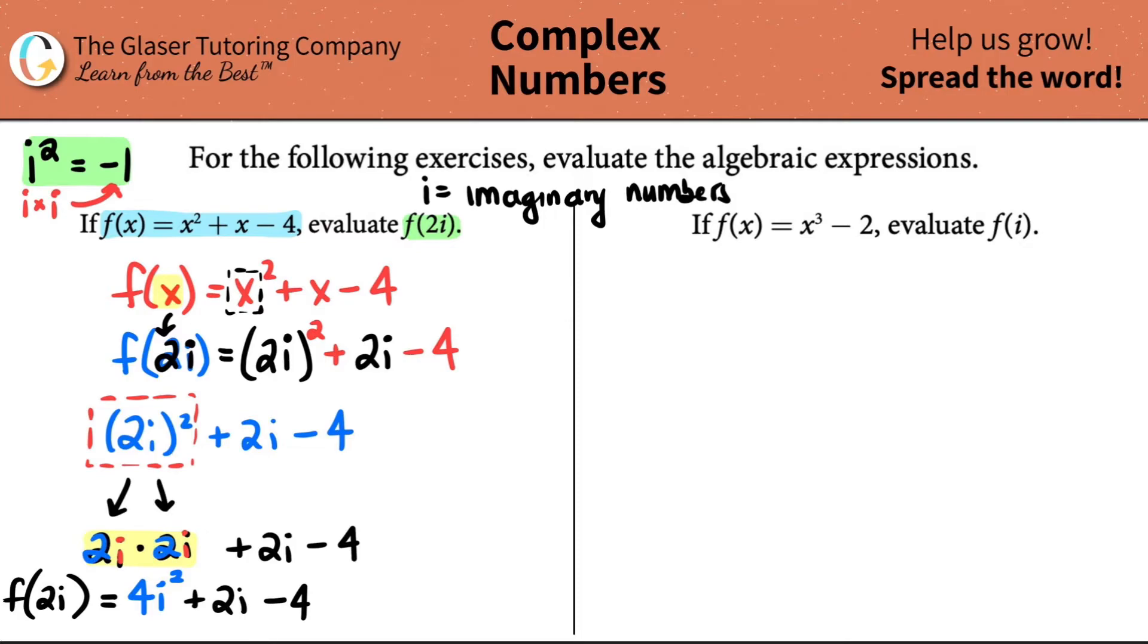So I have to look for my function and see if I can substitute this idea so that I can get it out of i squared. And look, I do. I have an i squared right here. So instead of it being 4 times i squared, it's 4 times a negative 1. And then keep going, 2i minus 4.